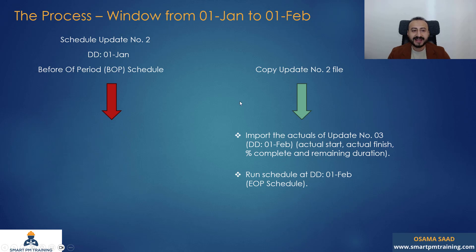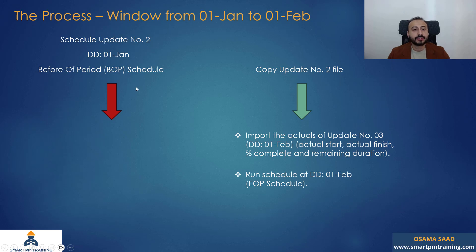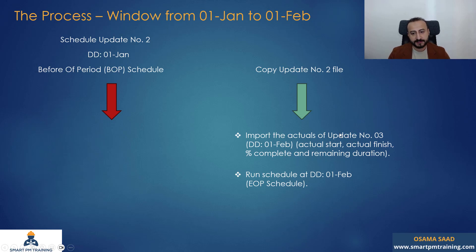Why did I do that? Because I wanted to split the actual progress from the logic. When I do that, I am ignoring any changes to the schedule that took place during that window, because when you prepared update number three, maybe you made some changes. And I want to evaluate the delays before any changes — that's the purpose.